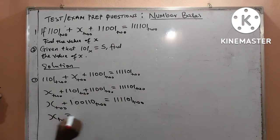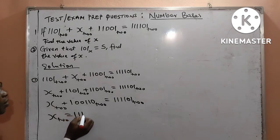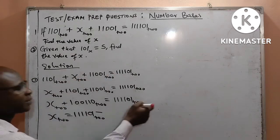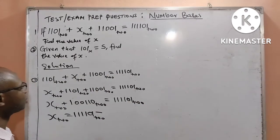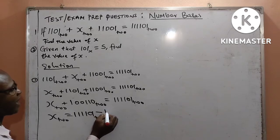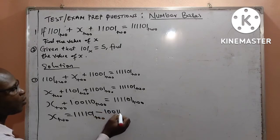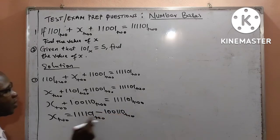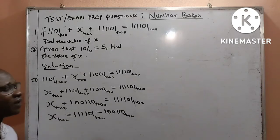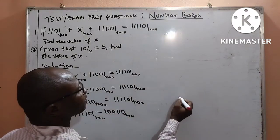x to base 2 will now be equal to 111101 base 2 minus, because this is plus, coming to the right-hand side to turn to negative. So, I have 100110 base 2. I will also subtract it. And when I subtract it, I will know the value of x. Let us do the subtraction.